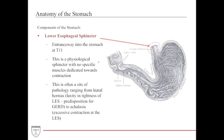Hiatal hernias involve increased laxity in the sphincter, which can cause GERD — gastroesophageal reflux disease. Achalasia, on the other hand, involves excess contraction of the lower esophageal sphincter, causing it to fail to allow food bolus or liquids to pass through into the stomach.